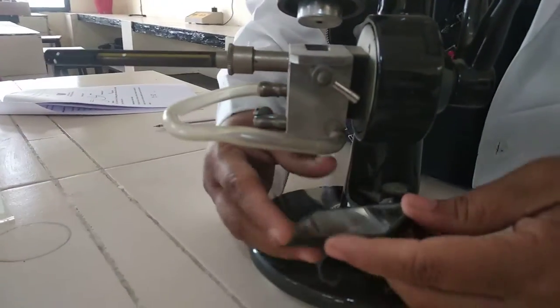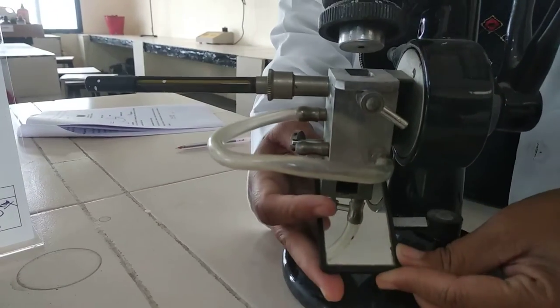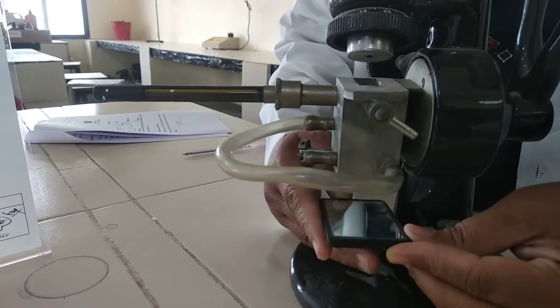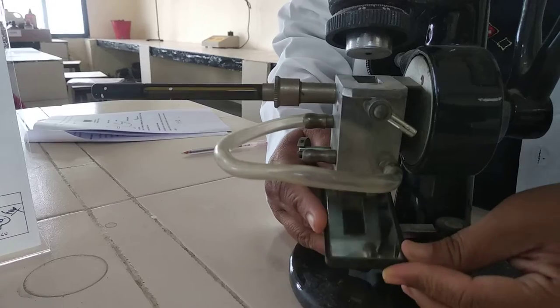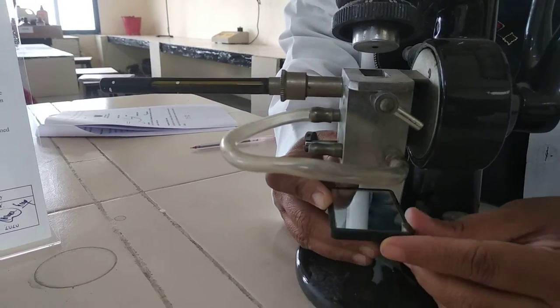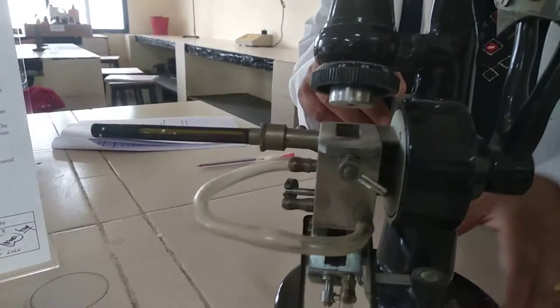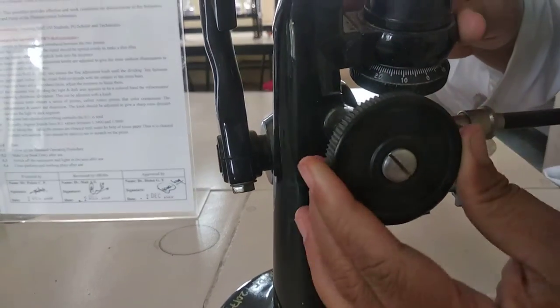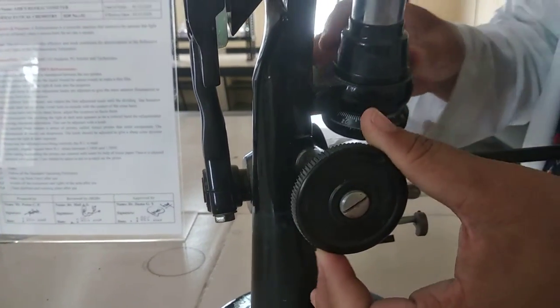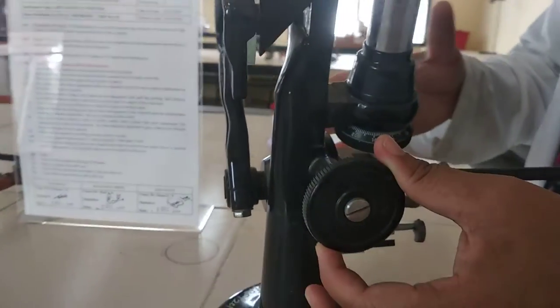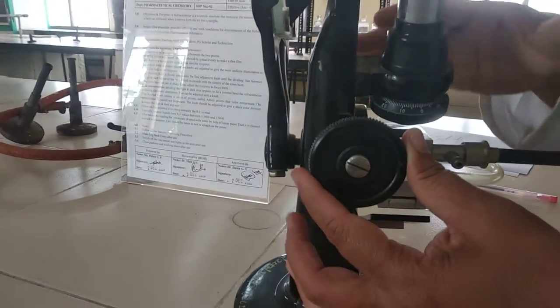Second one, this one is a mirror. The mirror is used to focus the light. Then it contains one knob, an adjusting knob, to adjust our reading or to focus the sample for adjusting the reading.